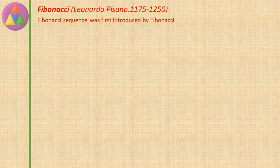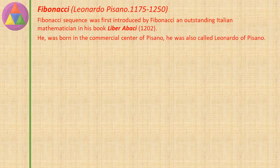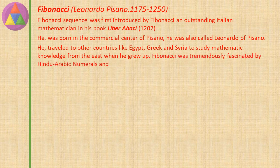The Fibonacci sequence was first introduced by Fibonacci, an outstanding Italian mathematician, in his book Liber Abaci during the year 1202. He was born in the commercial center of Pisa and was also called Leonardo of Pisa. He traveled to other countries like Egypt, Greece, and Syria to study mathematical knowledge from the east when he grew up. Fibonacci was tremendously fascinated by Hindu-Arabic numerals and helped spread them through Europe.